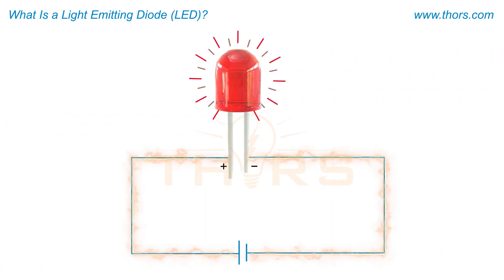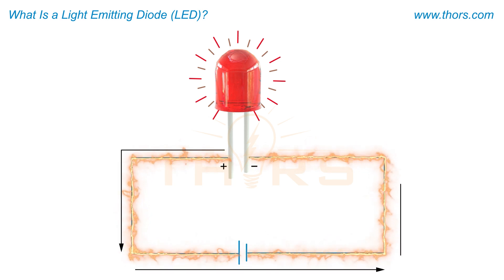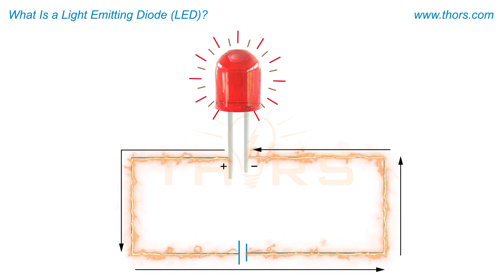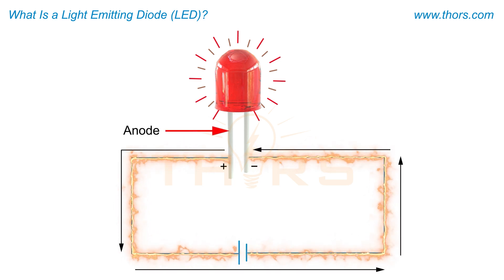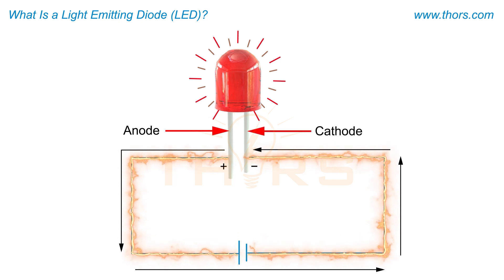In an LED, current flows only in one direction, from the P-type layer, which is the anode, to the N-type layer, which is the cathode.